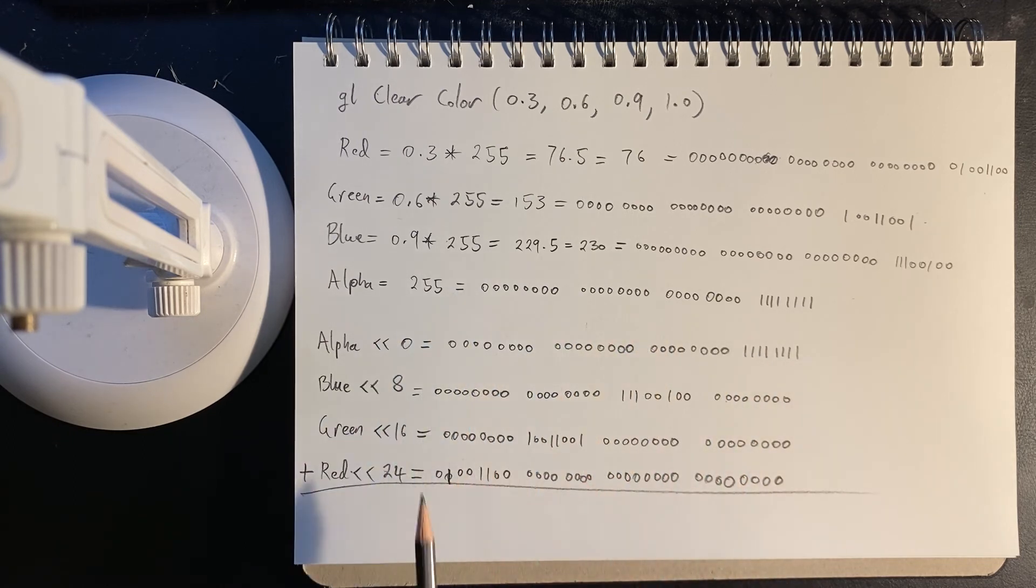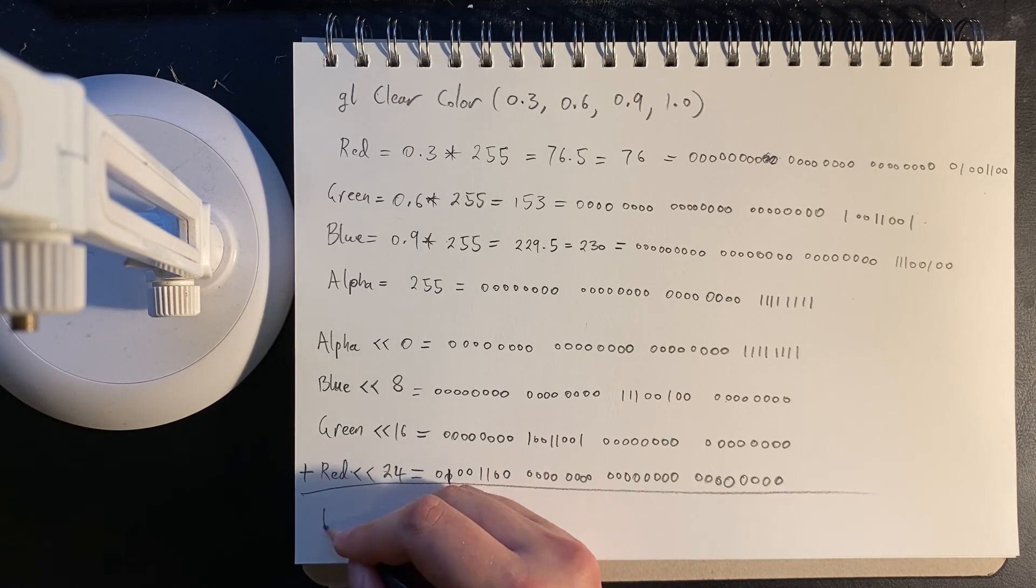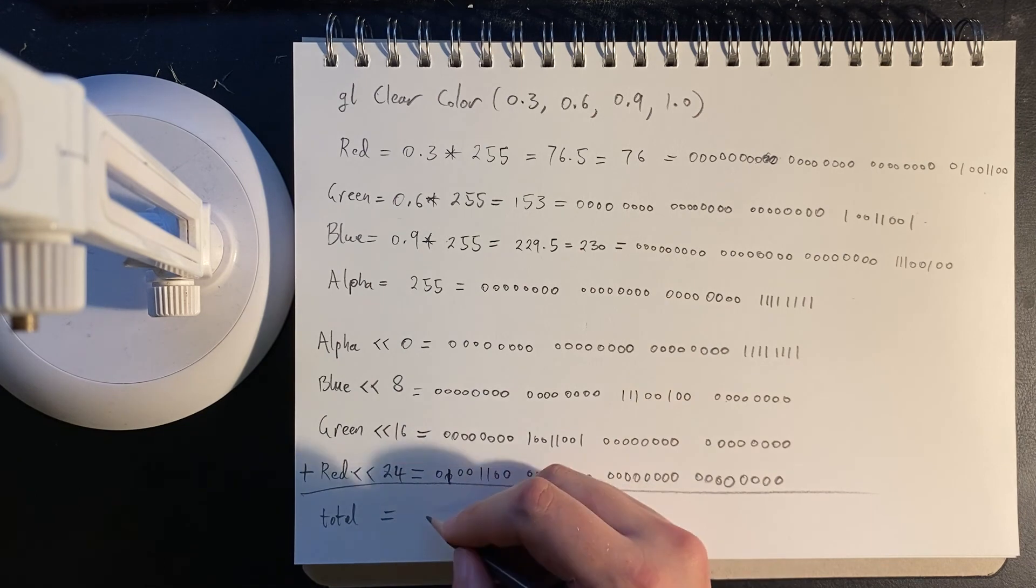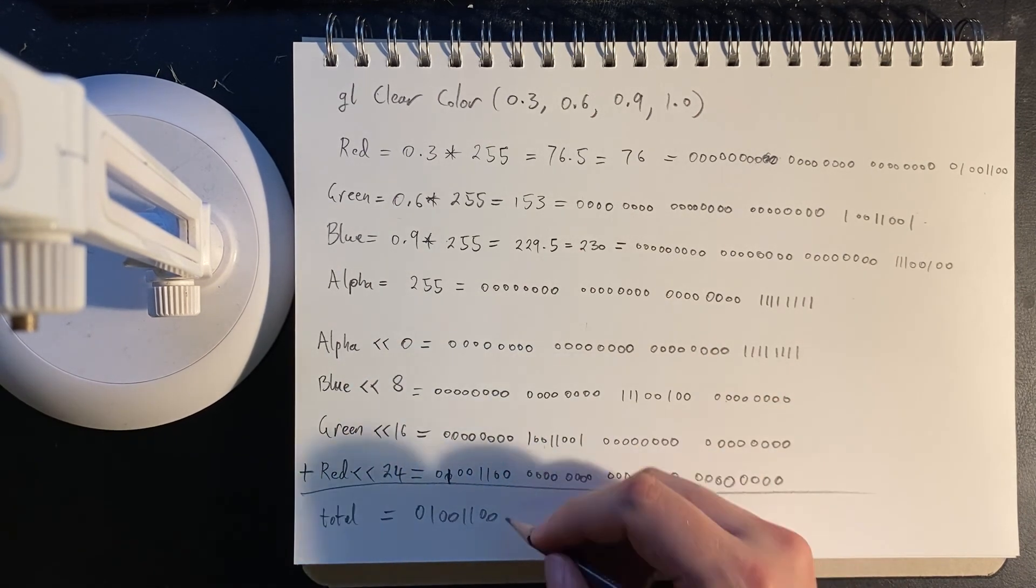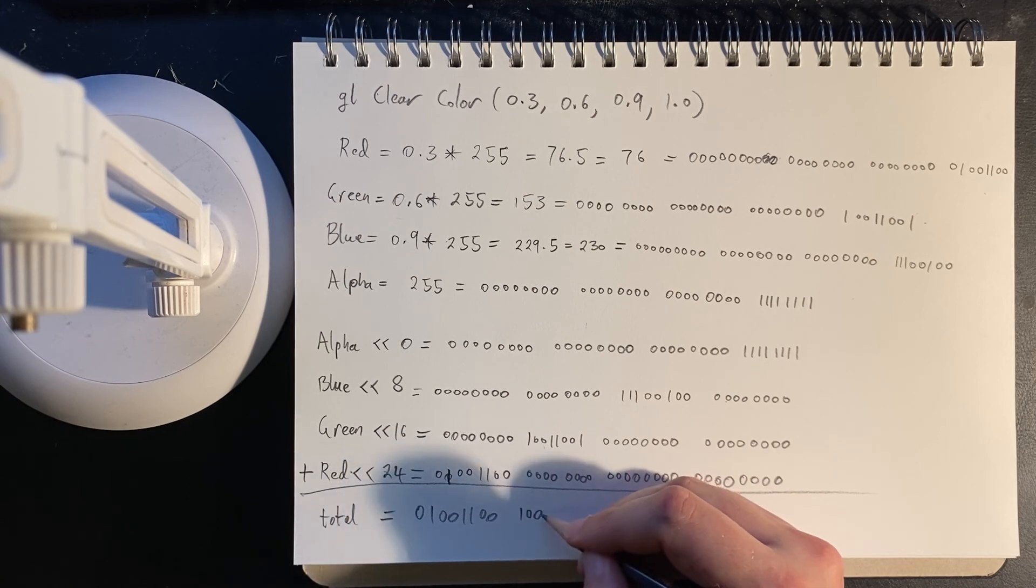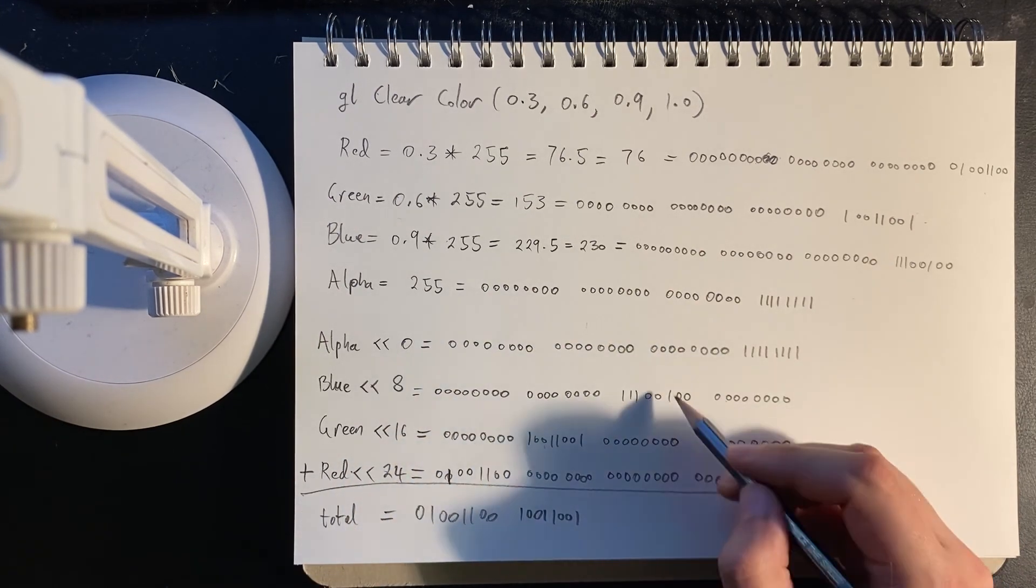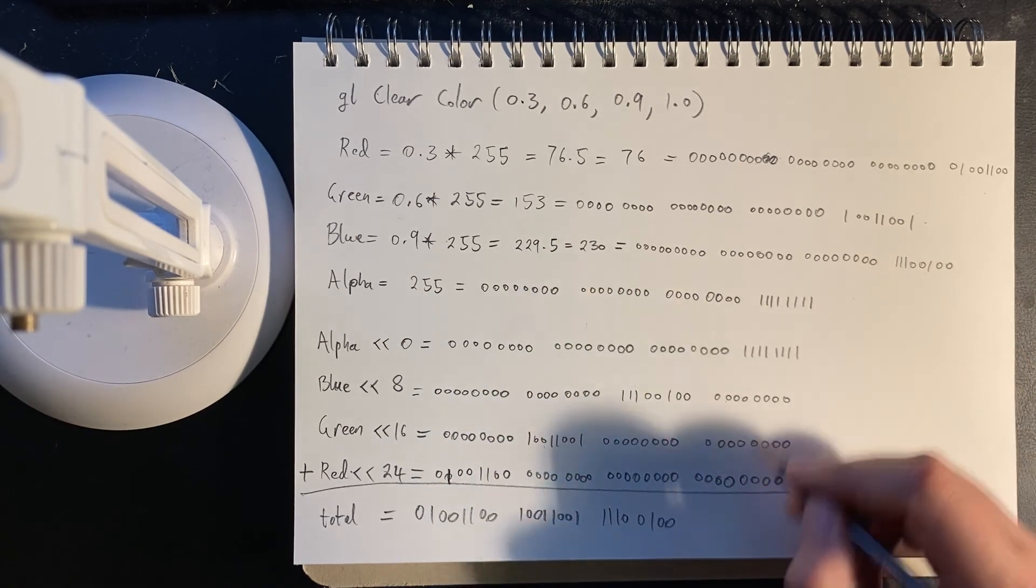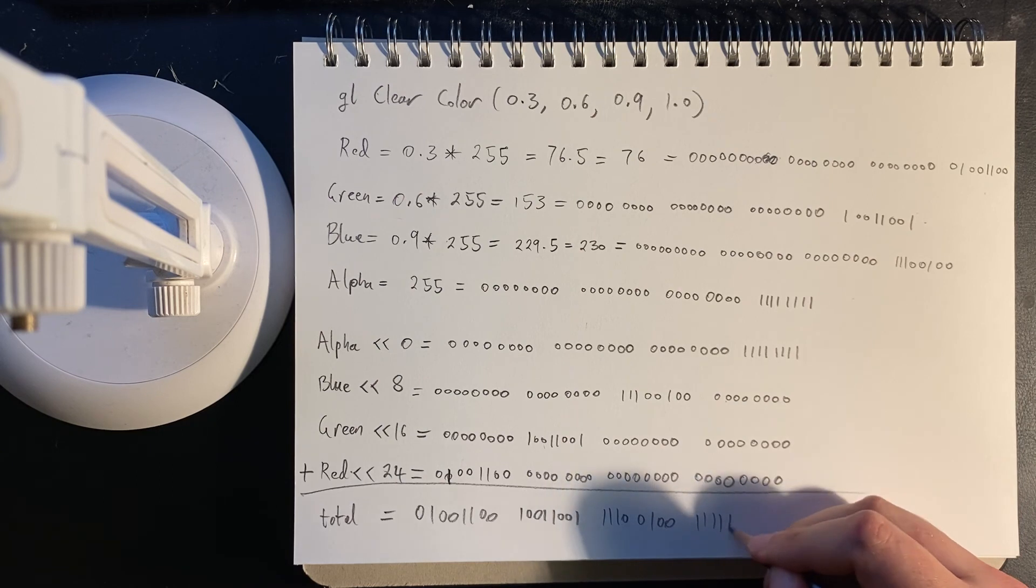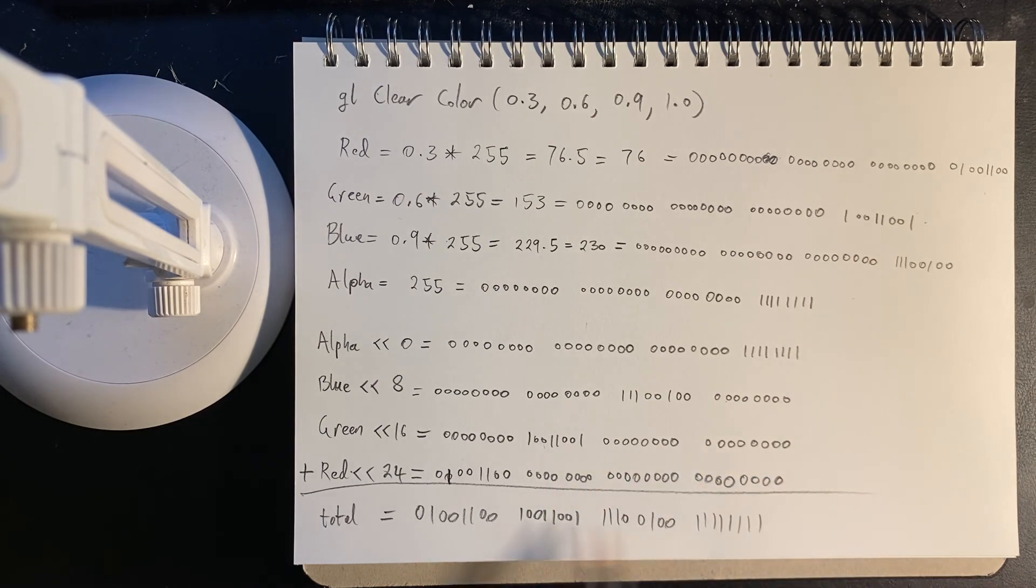And adding zero to those numbers will not make a lick of difference. So for the total, we have all of this plus the red. All of this, and the only info here is in the green. And then all of this here, and the only info is in the blue. And then all of this, and we're just capturing that alpha. And there we have it. That is the 32-bit unsigned integer, which is representing the color at that pixel.